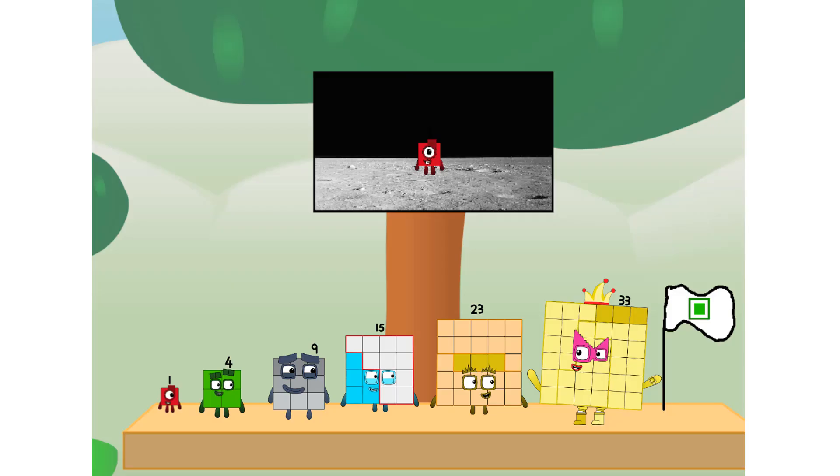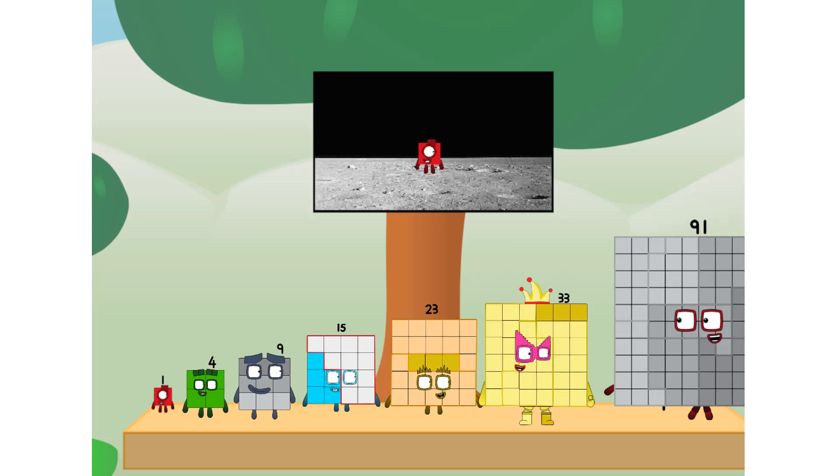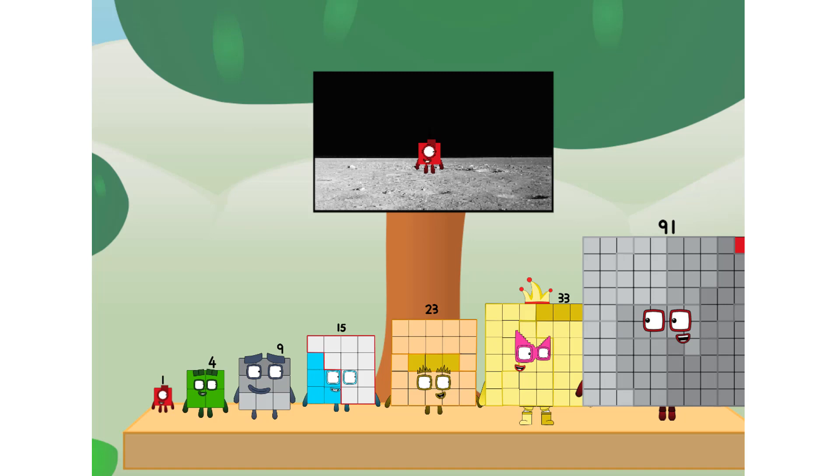The square has landed. We did it. The only thing left now is to plant the square club flag. Number one, we have a problem. I forgot the flag. Don't worry, little one. I'll take care of this.